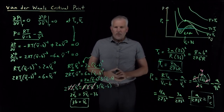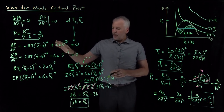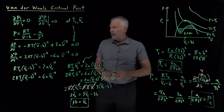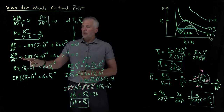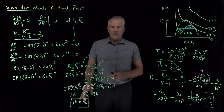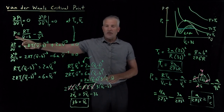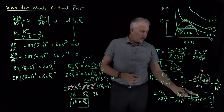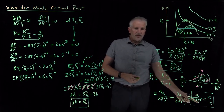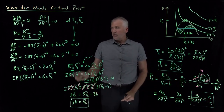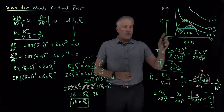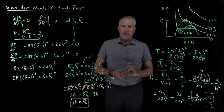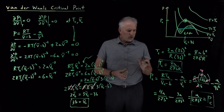It was worthwhile to go through all that algebra. Essentially we had two equations that we could use to solve for two unknowns — the temperature and the molar volume — and the van der Waals equation itself allowed us to solve for the third unknown, the critical pressure. Now we know that given the van der Waals constants a and b for a gas, we can calculate the critical pressure, critical molar volume, and critical temperature. We'll do an example of that next.